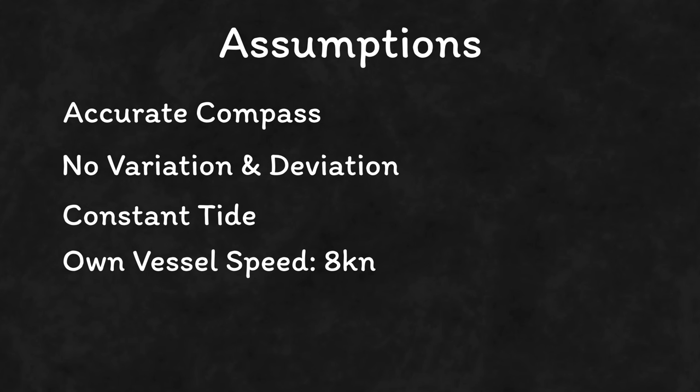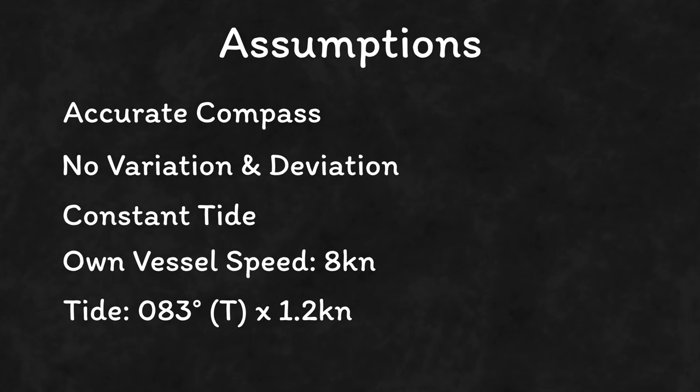The final thing we're going to need is the tide itself. I'm going to tell you the tide is running at 083 degrees true at a speed of 1.2 knots. There are loads of ways you can find the tide which we're not going to get into in this video — things like tidal stream atlases, tidal diamonds, and there's all sorts of mobile apps nowadays as well. If you want to know more about those let me know down in the comments because I could always make a video about that in the future.